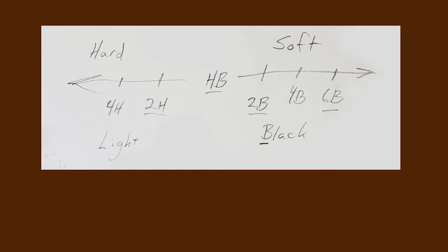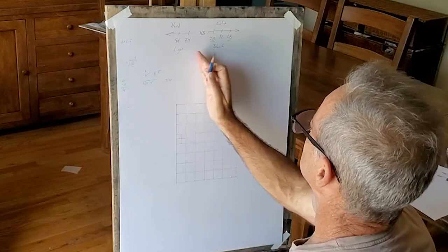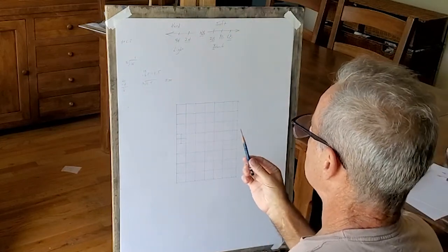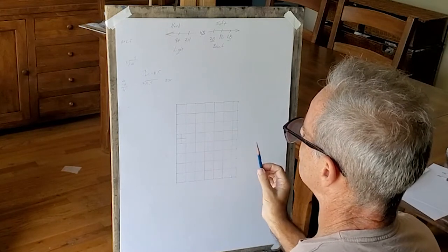And then with the Bs, the higher the number, the blacker it is, so I wanted to specify that. So we're going to create a menu of values along the top here. You're not going to have all this stuff on your paper, but this is where we really get to get the sense of how the pencils work.